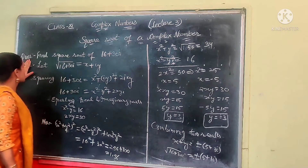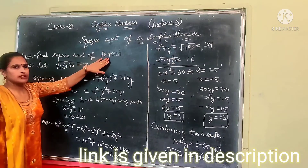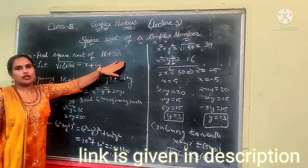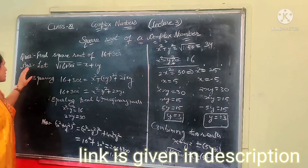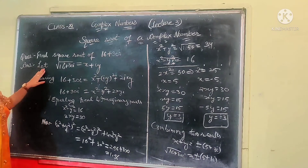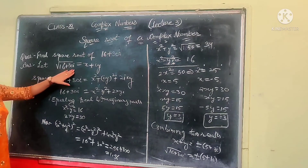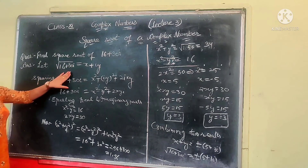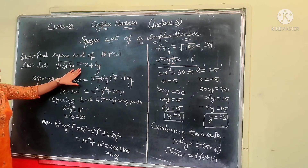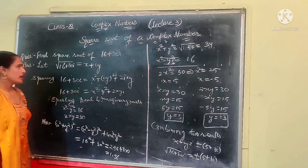First of all, find the square root of 16 plus 30 iota. We let the square root of 16 plus 30 iota equal to x plus iota y.